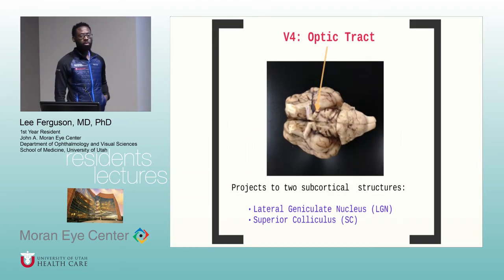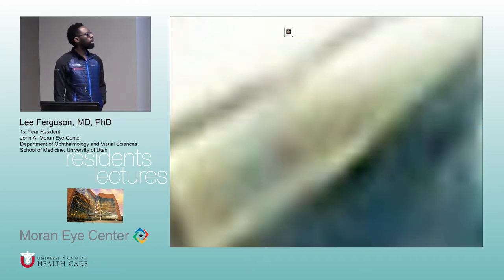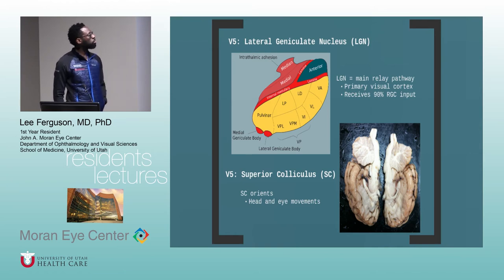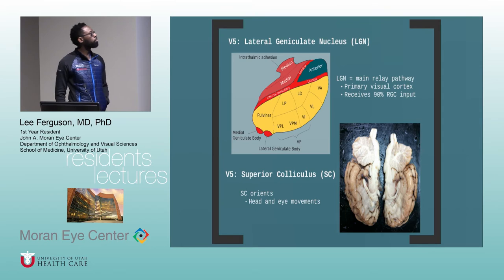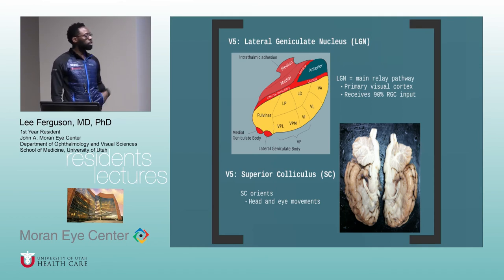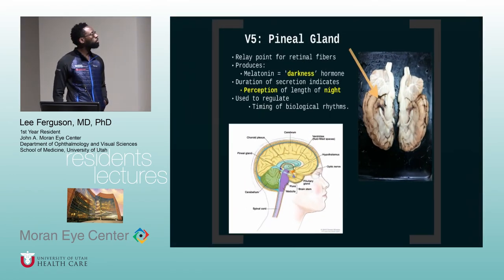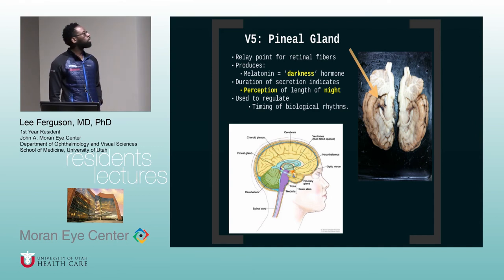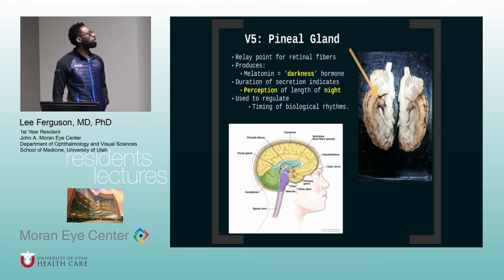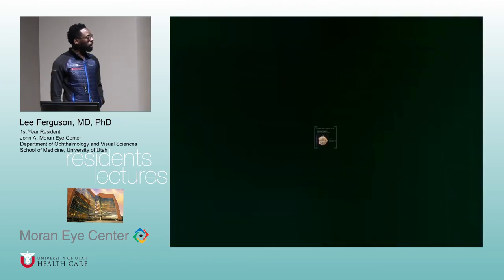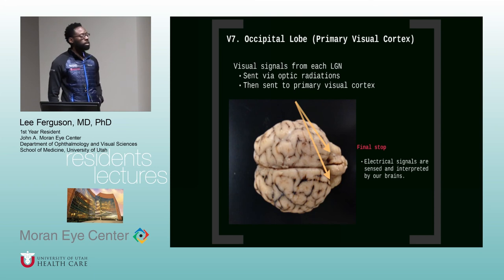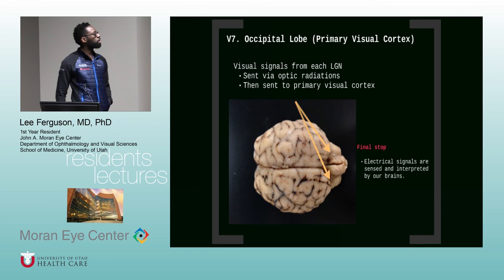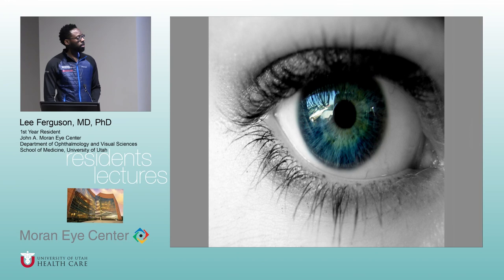Continuing the description of the different pathways: the optic tract projects to the lateral geniculate nucleus as well as the superior colliculus. The lateral geniculate nucleus serves as the primary relay pathway for signals from the retinal ganglion cells. The superior colliculus is important for head and eye orientation and movement. The pineal gland receives fibers important for the production of melatonin, the hormone involved with circadian rhythms. The occipital lobe is the primary visual cortex and the final step of this relay pathway from the RGC through multiple paths. And that is the light pathway.